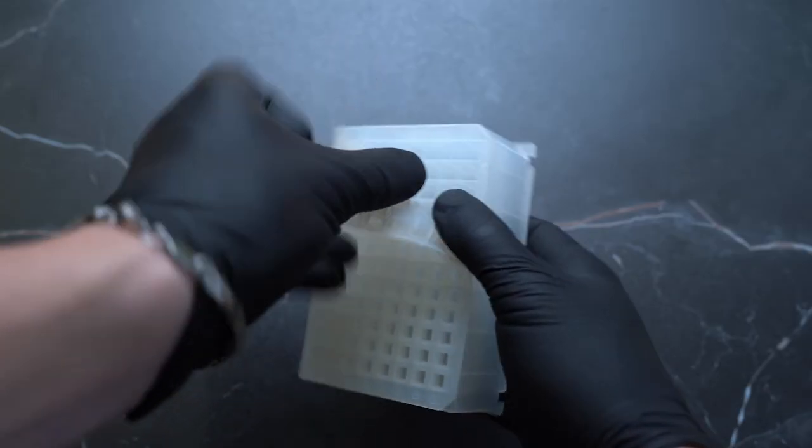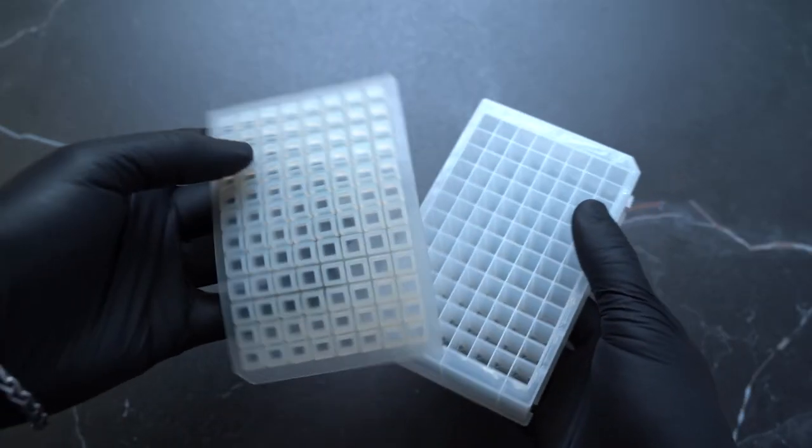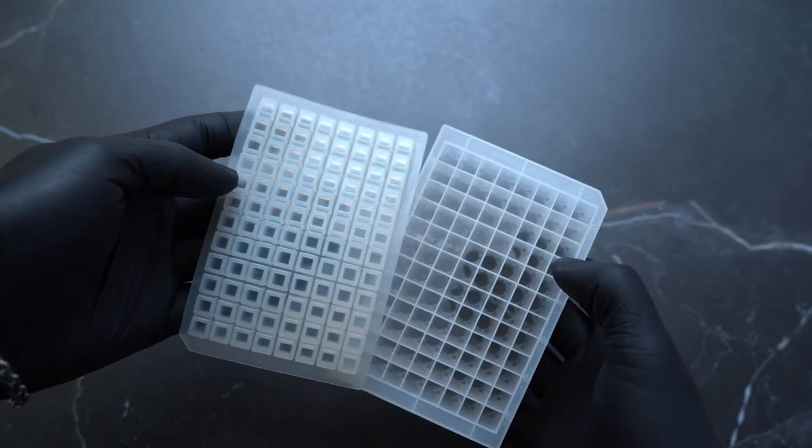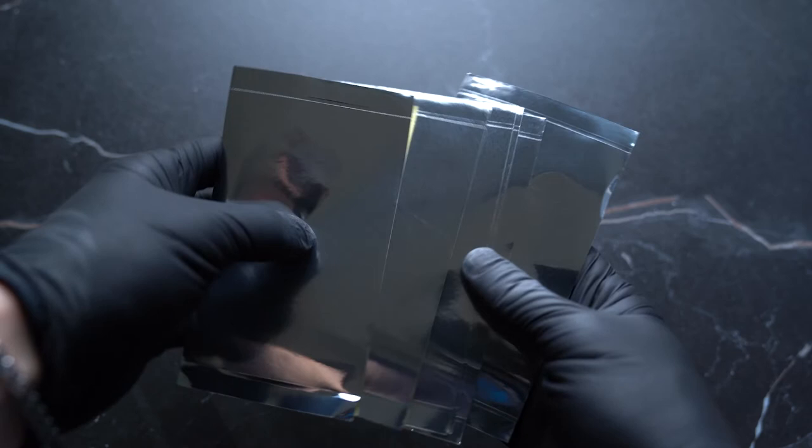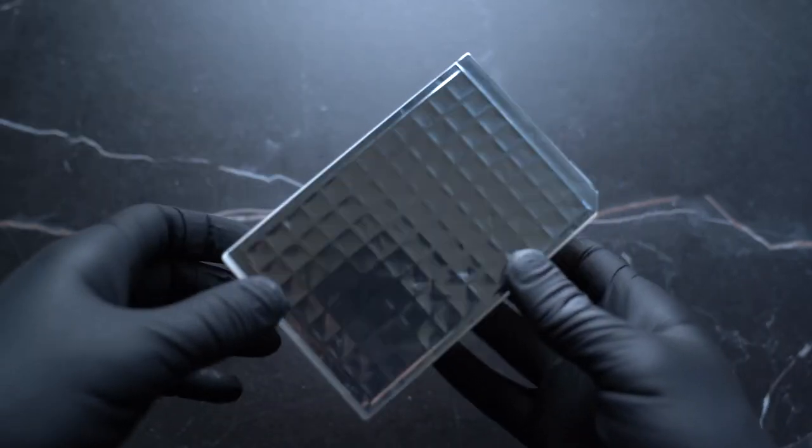We also offer the 96 well plate conical sealing mat made of silicone to help protect your samples and keep them in one place to prevent contamination. Conversely, you can also use aluminum foil as a cost-effective way to seal your plates.